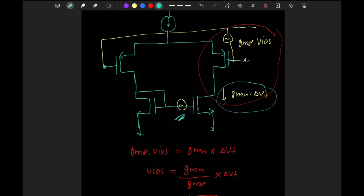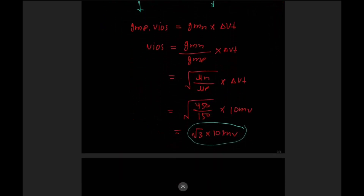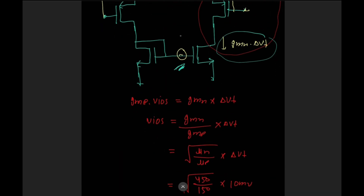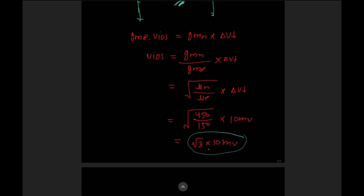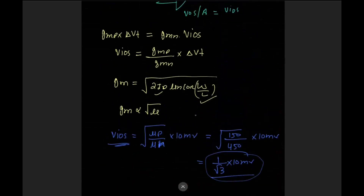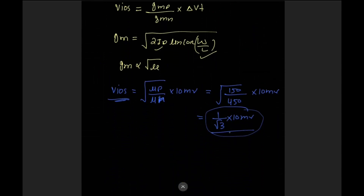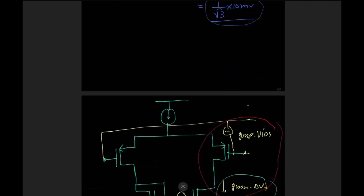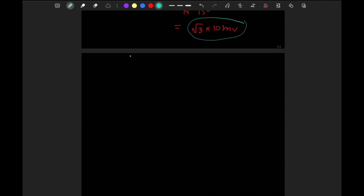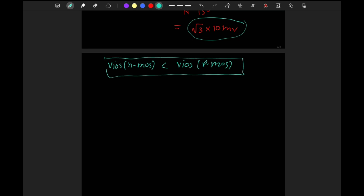Comparing both cases: when it's a PMOS input differential pair, the input offset voltage is √3 times 10 mV, and when it's an NMOS input differential pair, the offset voltage is (1/√3) times 10 mV. So the NMOS pair gives a lower input offset voltage than the PMOS configuration. This is the comparison of both types of configurations.